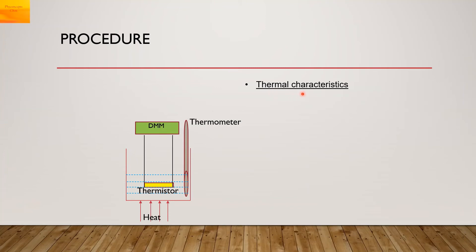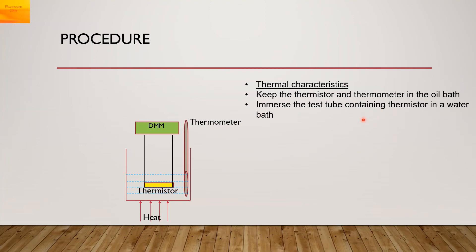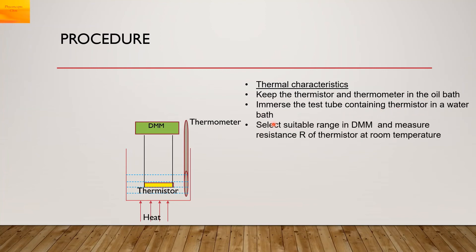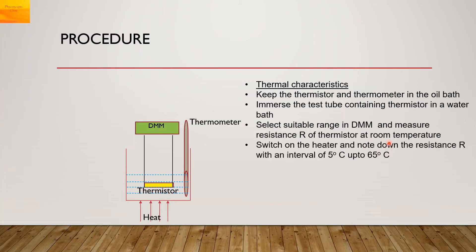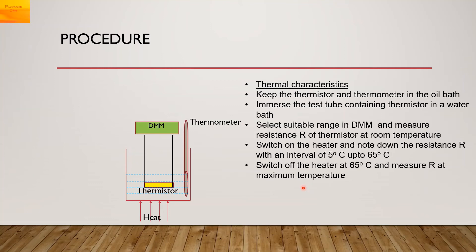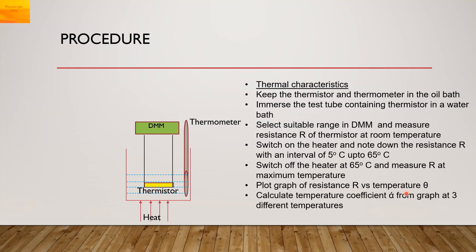We are going to study the thermal characteristics. In the procedure, you keep the thermistor and the thermometer in the oil bath, or immerse the test tube containing the thermistor in a water bath. Select a suitable range on the DMM and measure the resistance R of the thermistor at room temperature. Switch on the heater and note down the resistance at intervals of 5°C up to 65°C. Then plot a graph of resistance R versus temperature θ, and calculate the temperature coefficient alpha from the graph at 3 different temperatures.